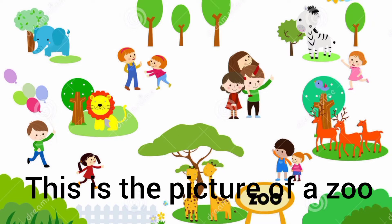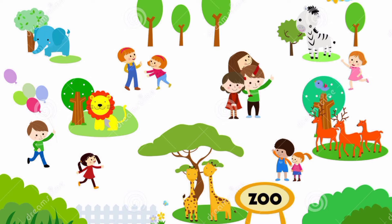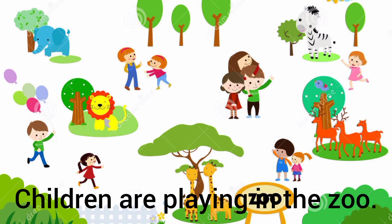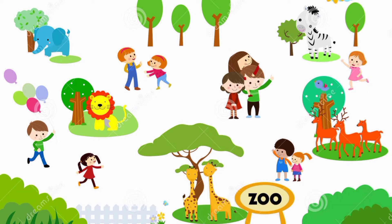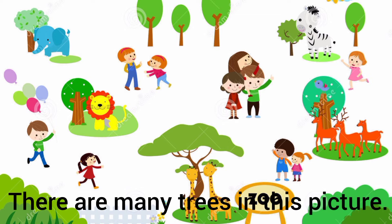Now here we have a picture and let's do picture writing. This is the picture of a zoo. In this picture you can see many children, so you can write: 'Children are playing in the zoo.' We can also see many trees, so our next sentence is: 'There are many trees in this picture.'